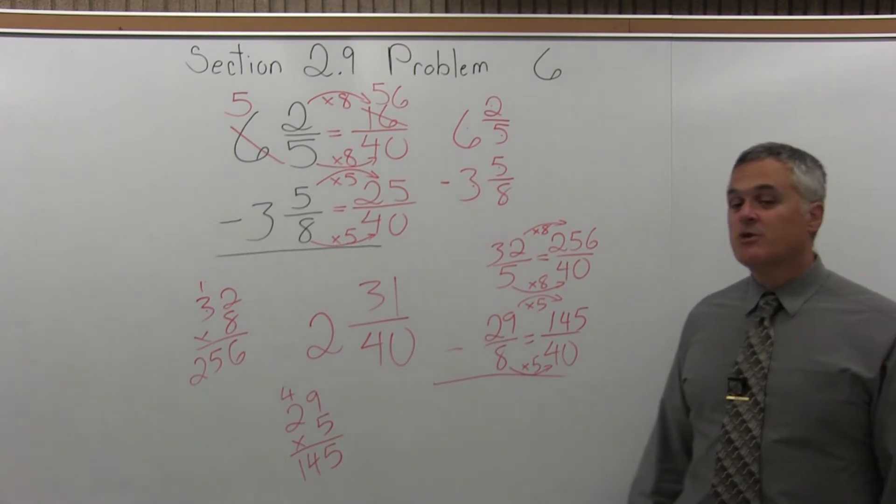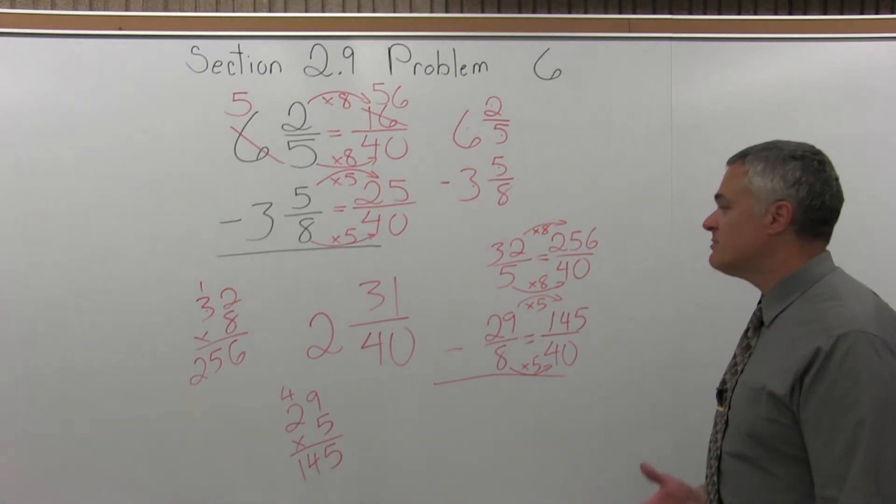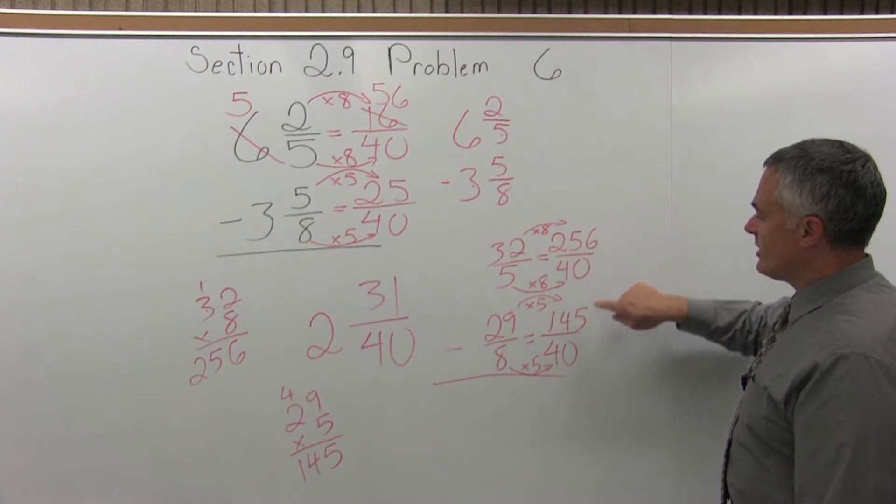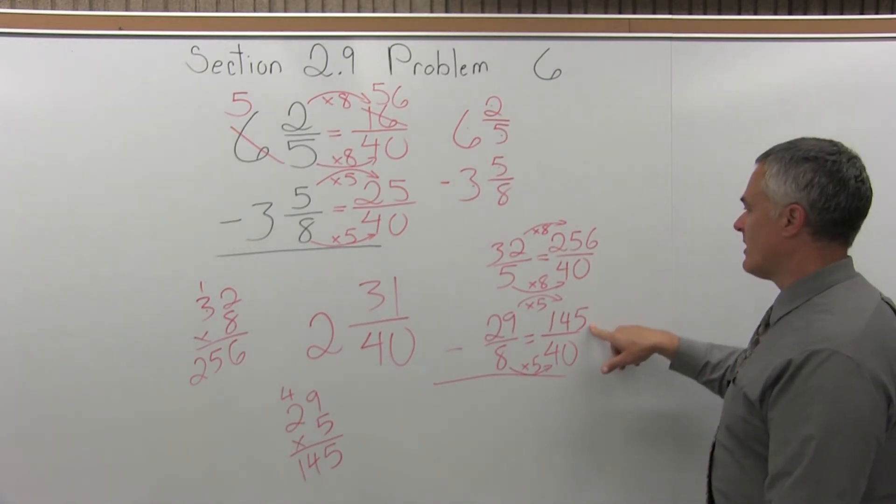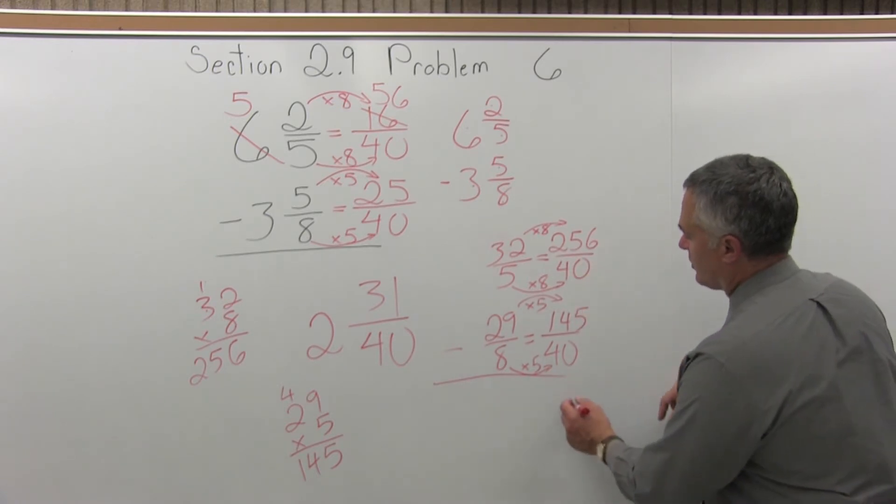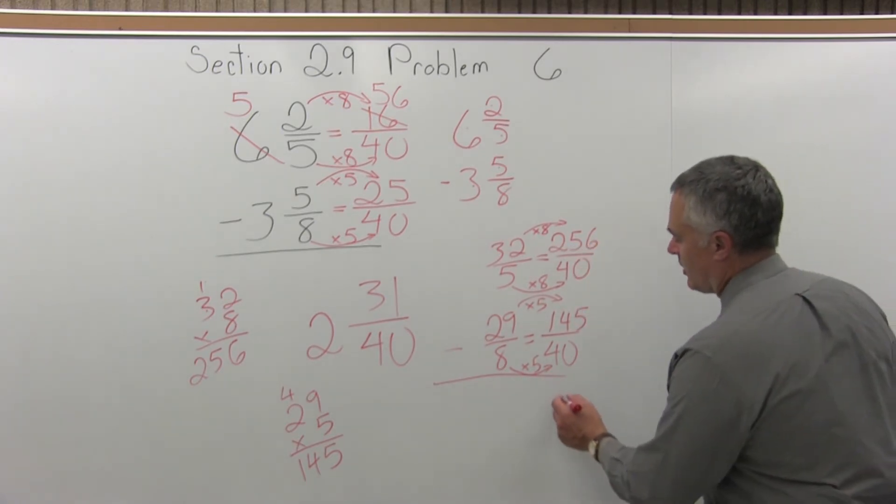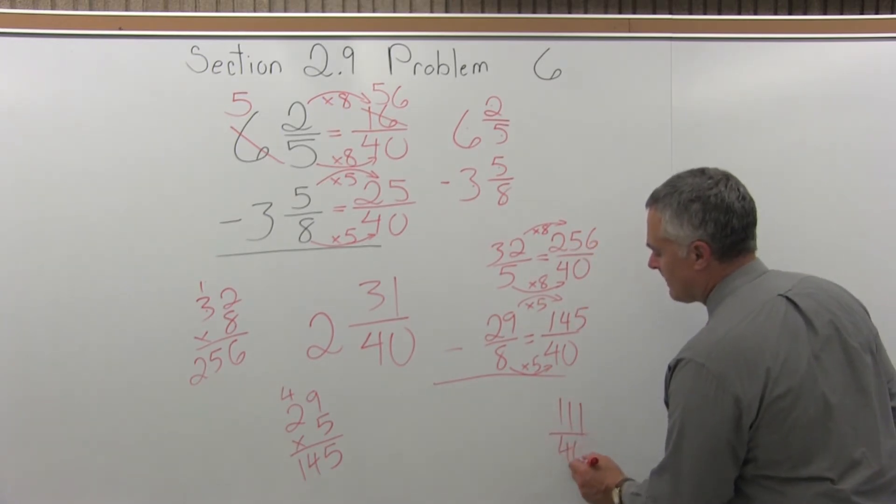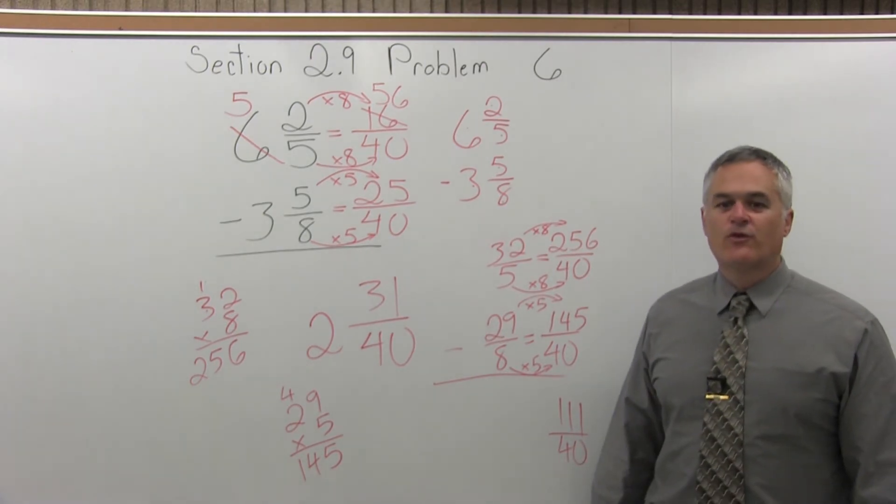Now you can subtract with no borrowing. They're bigger numbers, but no borrowing. 256 over 40 minus 145 over 40. 6 minus 5 is 1, 5 minus 4 is 1, 2 minus 1 is 1. So I have 111 over 40.